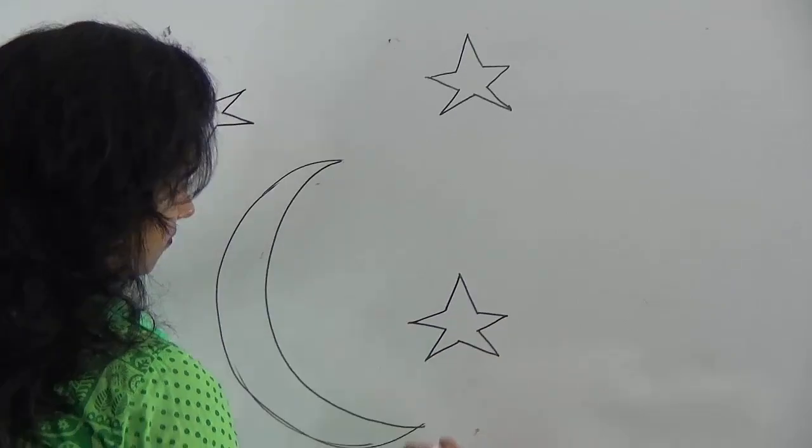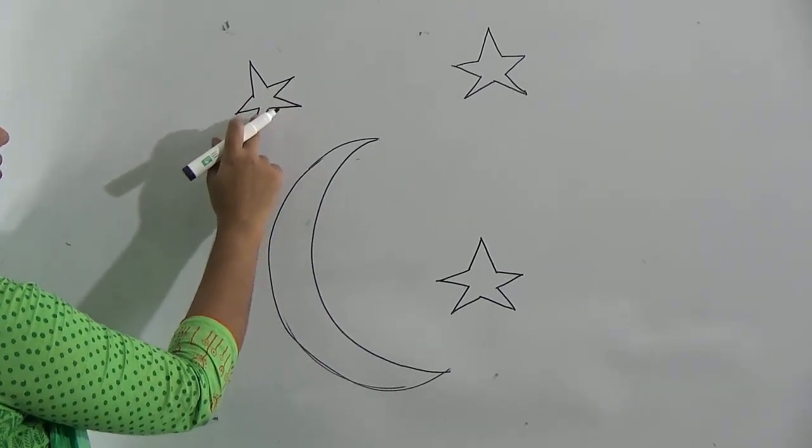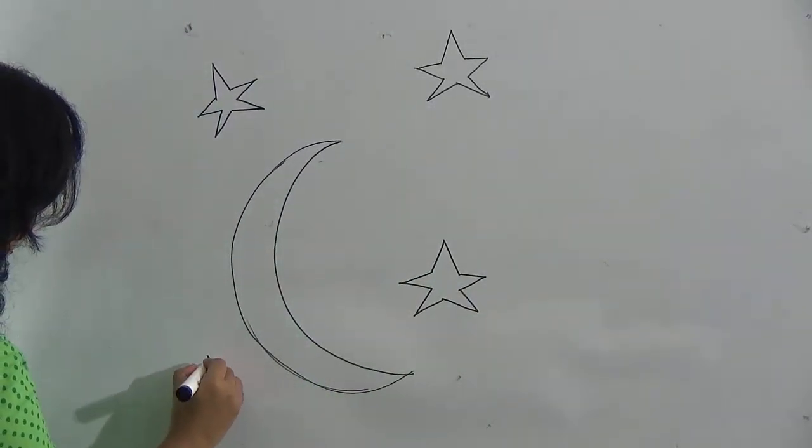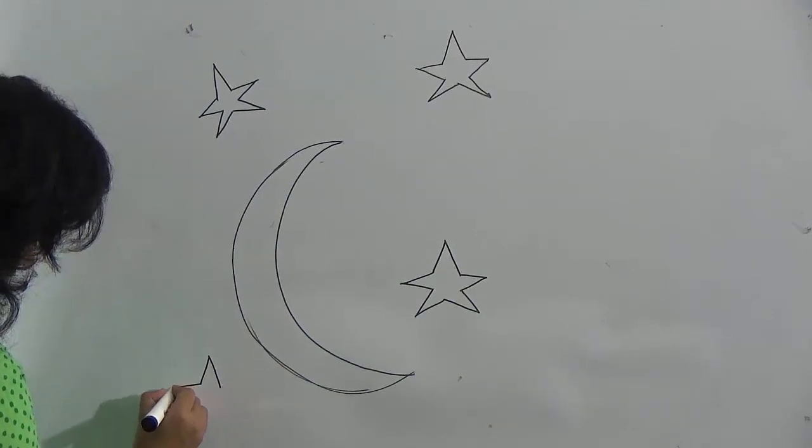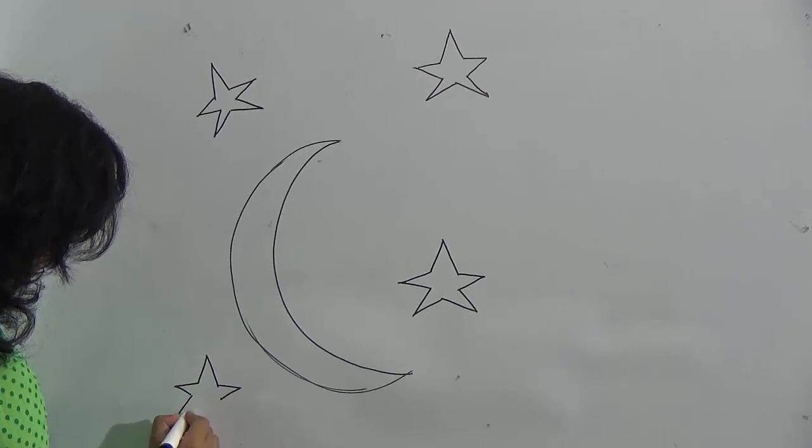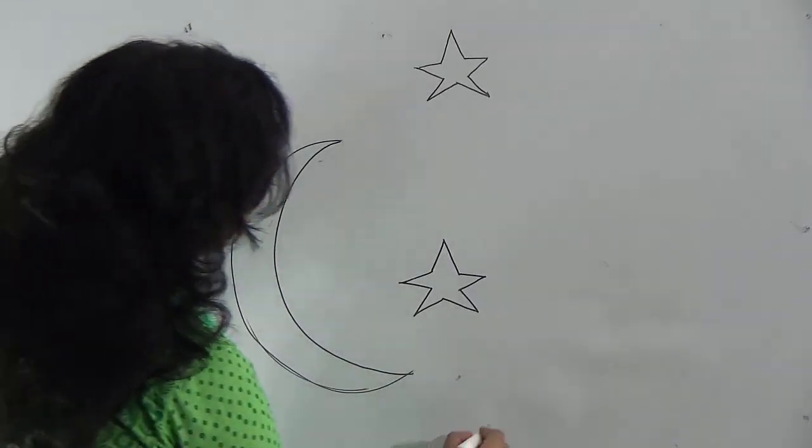Look, I have used here 1, 2, 3, 4, 5 lines and it makes a star, student. Are you drawing with me? Look at my hand very carefully and follow my drawing.